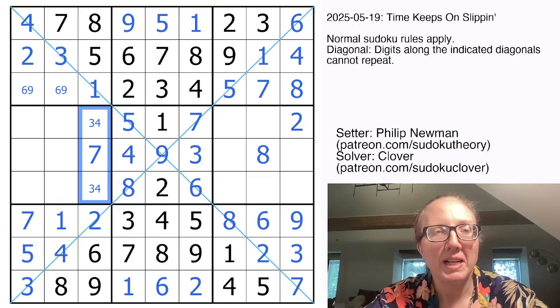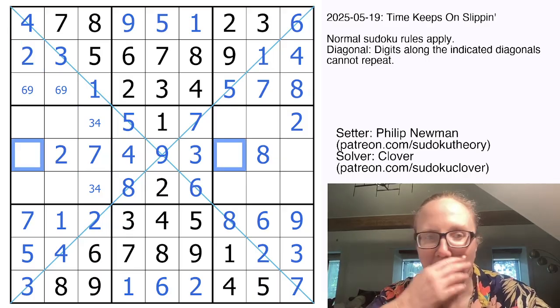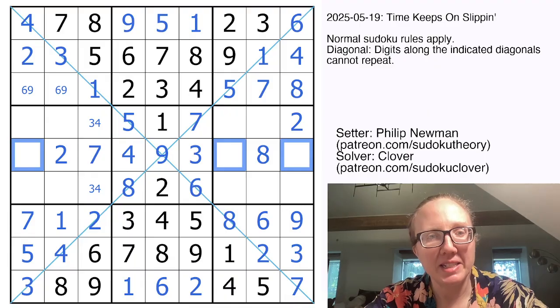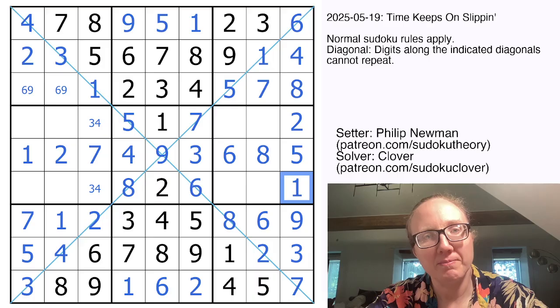In row 5, I need to place a 2 in one of those cells. 2 can't go there, so it goes right there. And I need a 1, 5, and 6. That's a naked 6. That's a 1, and that is a 5. That makes this a 1. And we are coming along now.